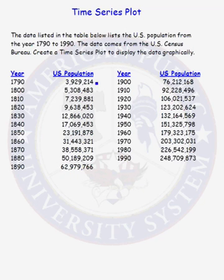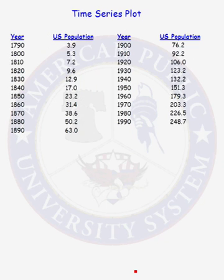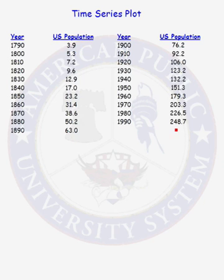Once we have all of these data values plotted, we just connect each of our plotted values. In order to fairly graph the U.S. population, some rounding had to be done to the actual numbers. In this table we present the year versus United States population, where the population has been rounded to the nearest tenth of a million. So all data values give the population of the United States in millions.